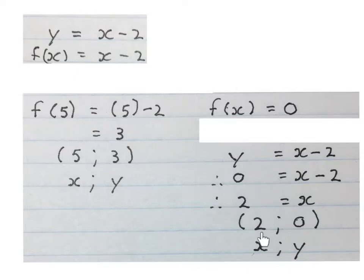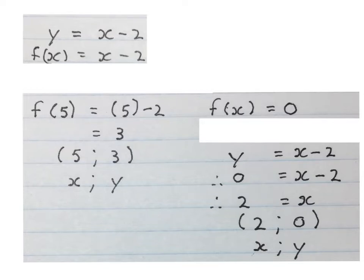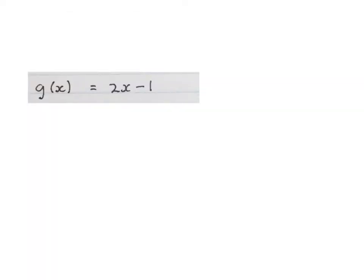Let's compare these two. In the first one they asked us to work out f of 5 — this 5 is in the bracket, so I replace the X with 5. The number in the second question doesn't have a bracket around it, so it can't be an X value — I put it in the place of Y and solve the equation. Please stop the video and get your brain around these two.